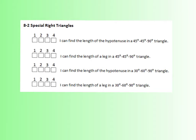We're continuing our talk on triangles with special right triangles. In the last section we dealt with right triangles and the Pythagorean theorem, but now we're going to look at some shortcuts. Instead of working out the Pythagorean theorem every time, we have specific patterns which certain triangles will always follow. We're going to look at a 45-45-90 triangle and a 30-60-90 triangle.